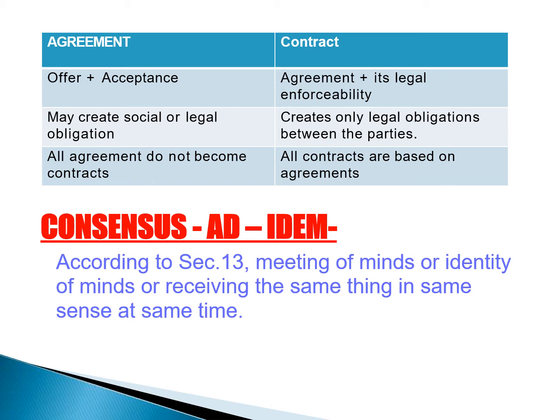For a contract to be legally enforceable, it must be in writing, properly registered, and have a proper stamp. An agreement may create social or legal obligations, while a contract creates only legal obligations between the parties. All agreements do not become contracts — sometimes one party's mindset changes and they do not enter the contract. But all contracts are based on agreements — agreement comes first, then the contract.